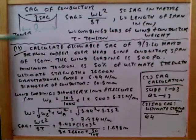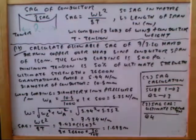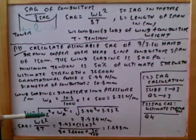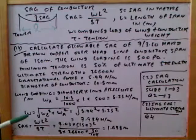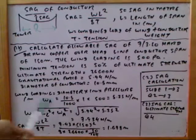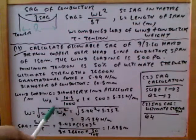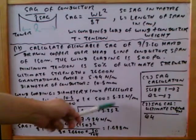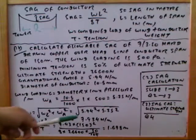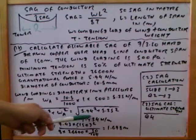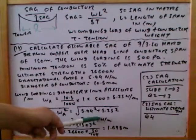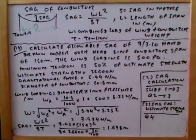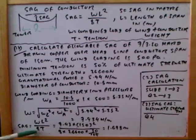We combine the two forces using the Pythagorean theorem: w = √(wc² + wa²) = √(5.94² + 5.25²). This gives a total weight of 7.934 newton per meter.